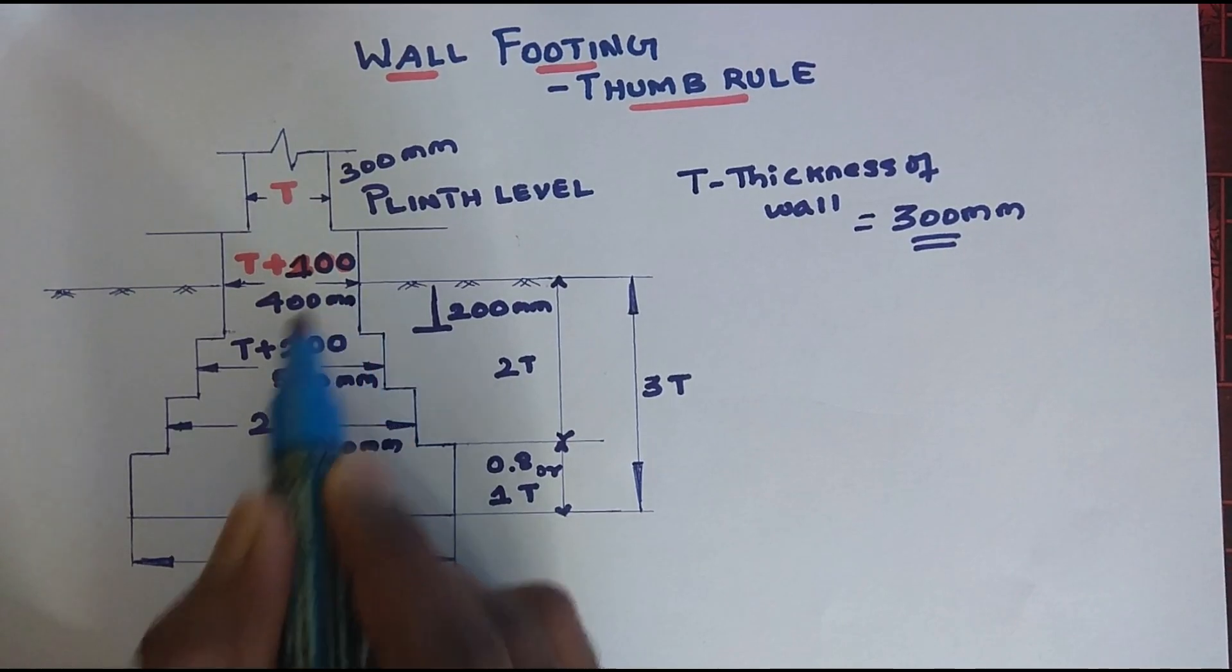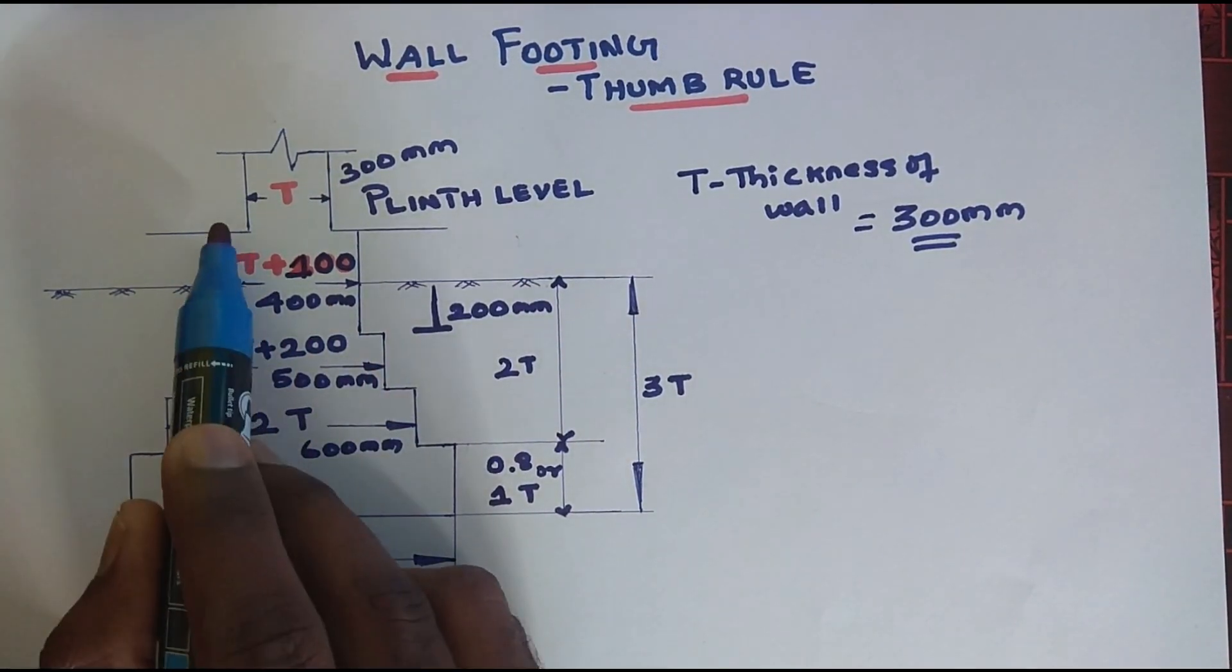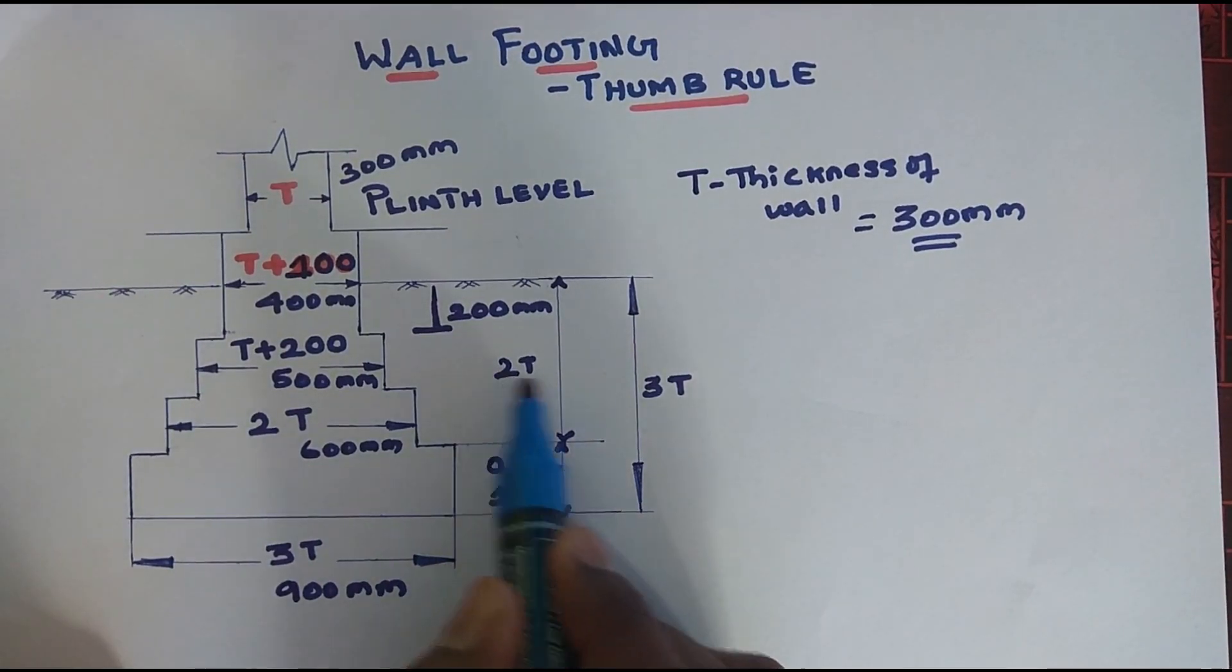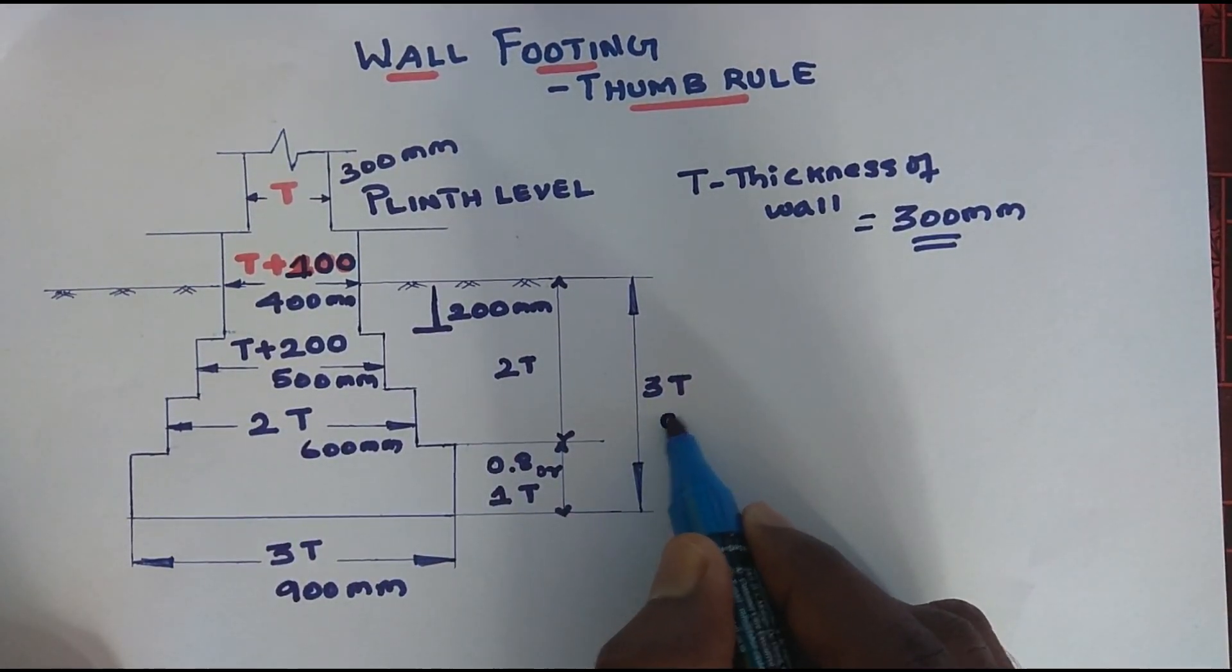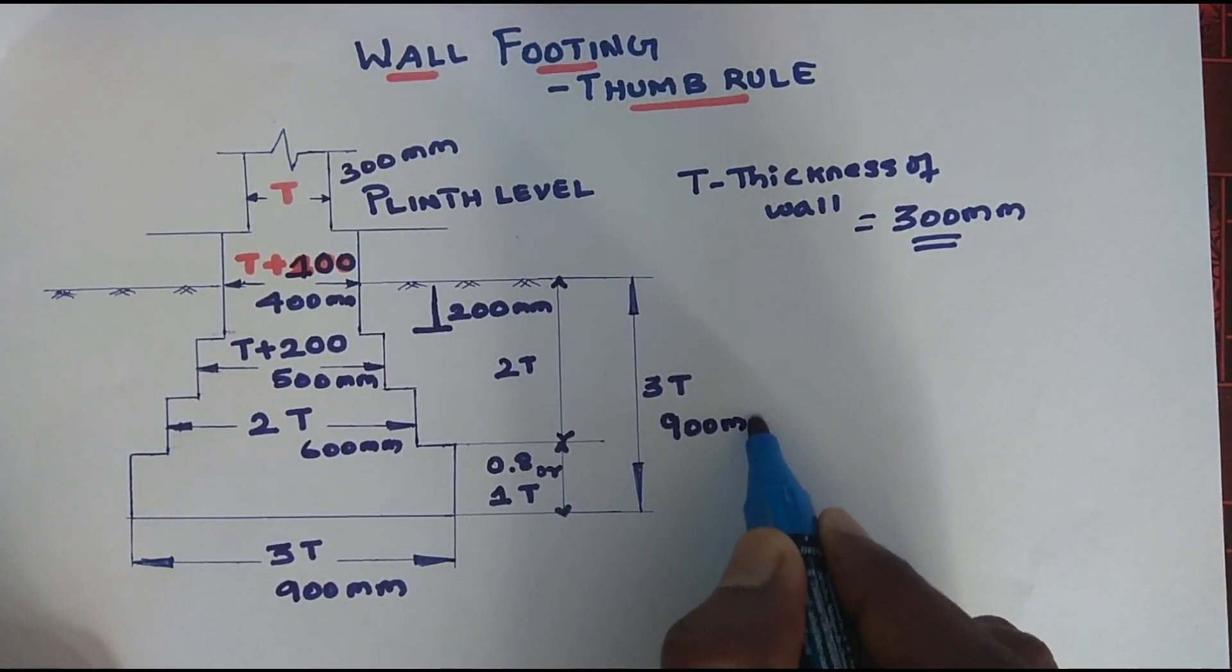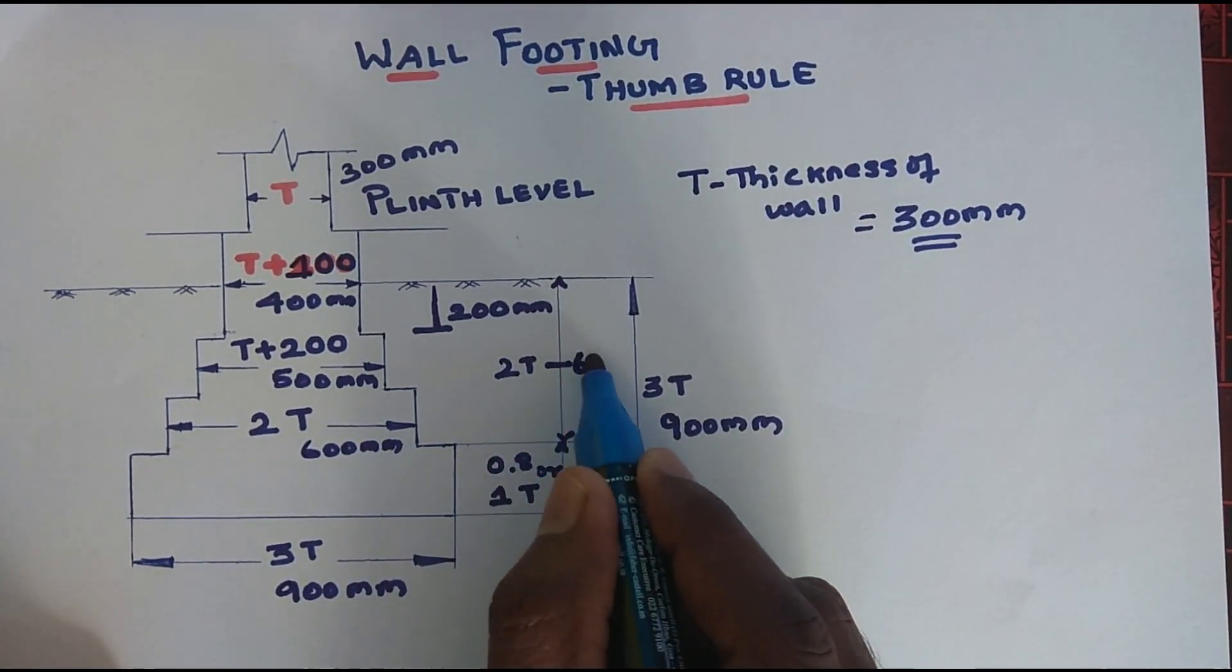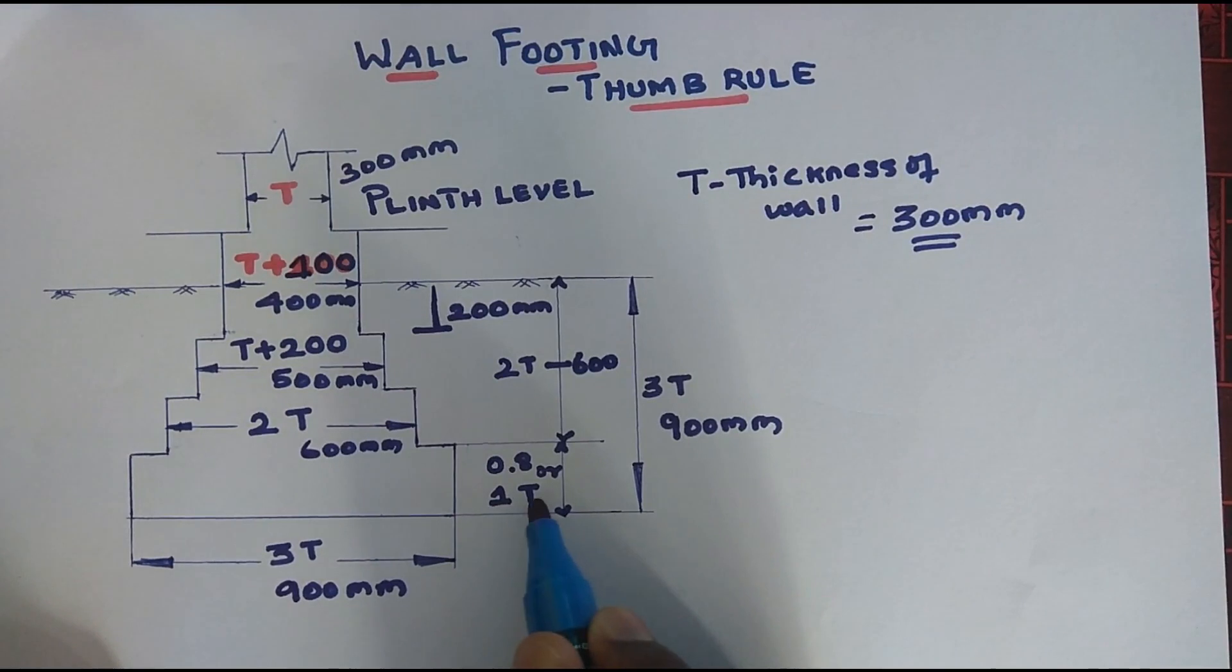Center to center 50 and 50. Here is the total width. What is the total width? 900mm. Here is 2T, so here is 600mm.